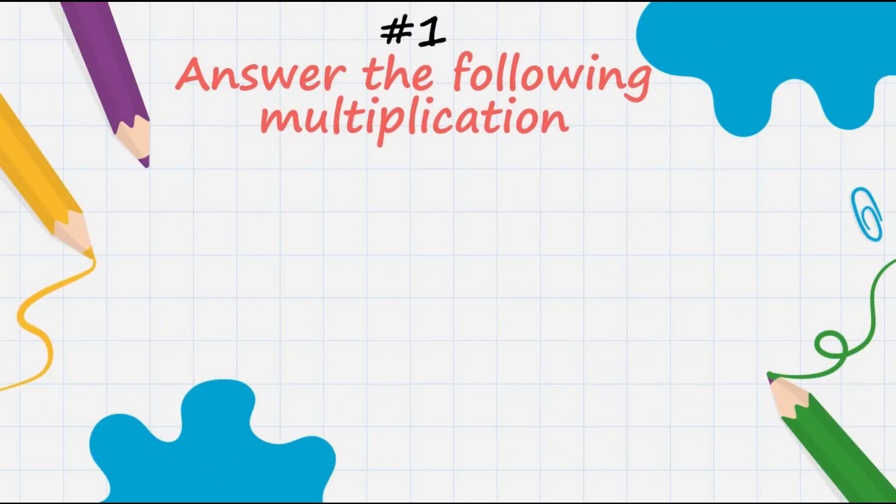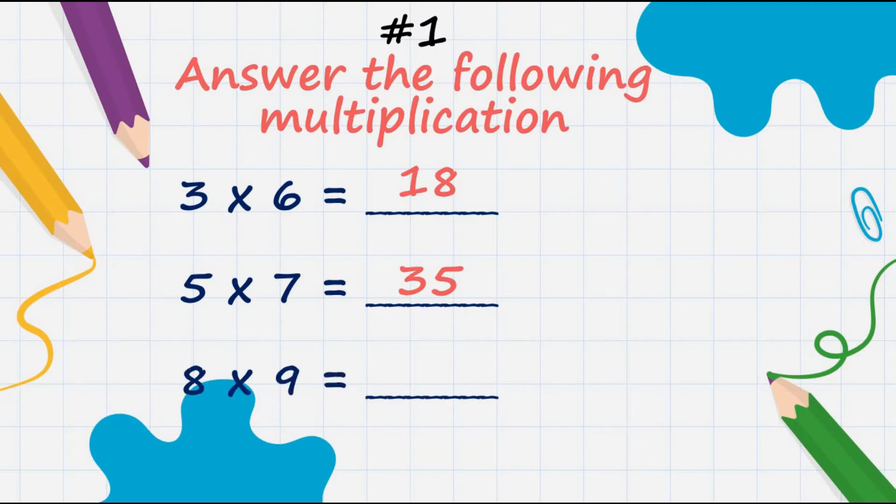For activity number one, answer the following multiplication. What is 3 times 6? Yes, it's 18. What is 5 multiplied by 7? Good, it's 35. How about 8 multiplied by 9? Yes, very good, it's 72. Next, how about 7 multiplied by 7? Very good, it's 49. And lastly, what is 6 multiplied by 9?